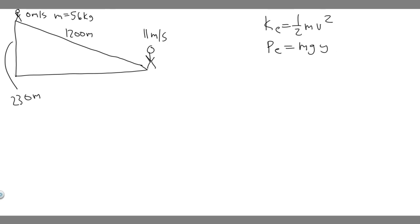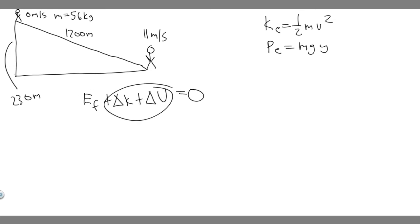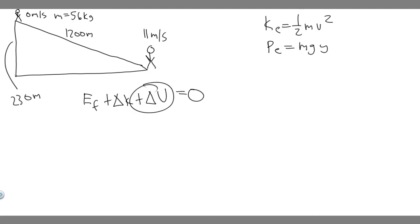The way you want to think about this is that the energy from friction plus the change in kinetic energy plus the change in potential energy is equal to zero. That's because the change in kinetic and potential energy from top to bottom equals what we're losing to friction. So the energy dissipated by friction is just equal to those two changes added up.